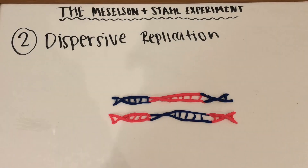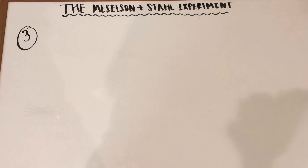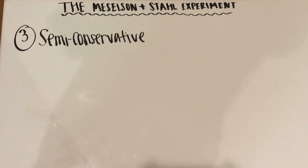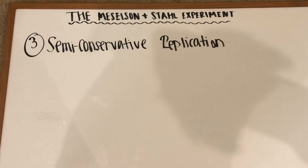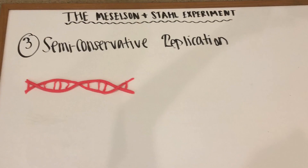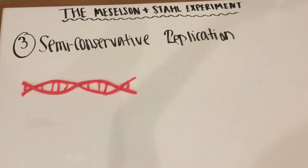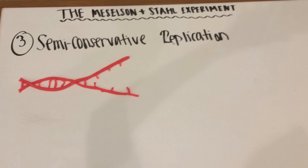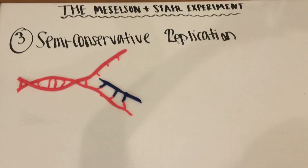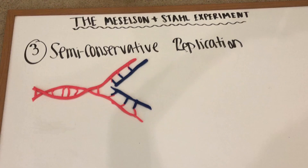The third hypothesis was semi-conservative replication. In this method, it was predicted that the DNA would unwind and the new strands would be copied based on the parent strands.